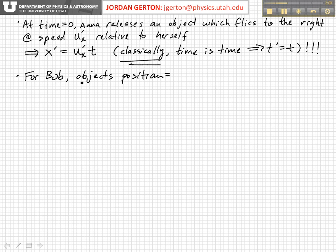And it's basically equal to the distance in words from Bob to Anna plus the distance from Anna to the object.